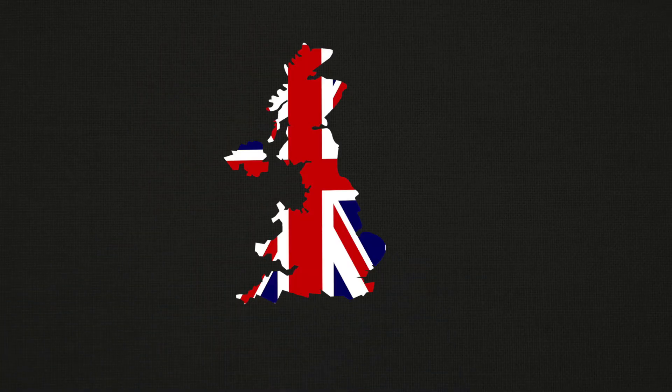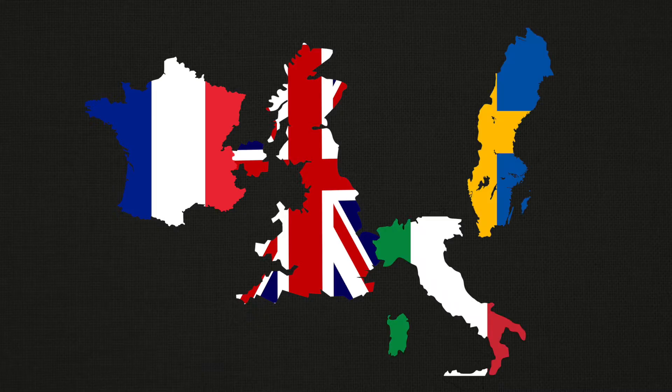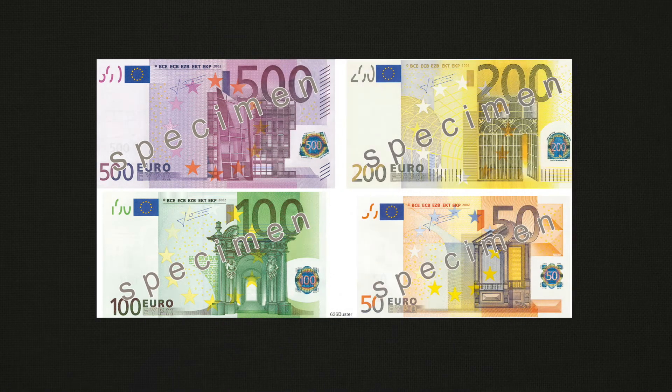The problem with this arrangement was that currency speculators could make bets on whether the British, the French, the Italians, or later the Swedish government would be able to maintain that exchange rate, and they would start to speculate by either buying or selling these currencies. Finally, in 1999, a new currency was created and adopted by a majority of the European Union states. It was called the Euro, and the idea was that instead of having one currency fixed to the other, they would all just adopt a single currency.